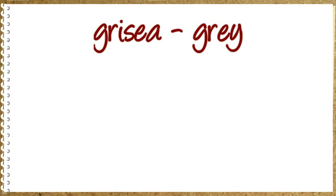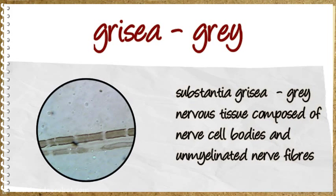Grizzia means grey. Substantia Grizzia: grey nervous tissue composed of nerve cell bodies and unmyelinated nerve fibers.